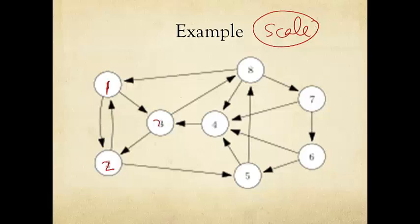Nodes one, two, three, four, five, six, seven, eight, representing eight web pages interconnected by bidirectional links, these hyperlinks.